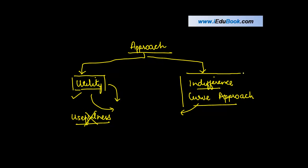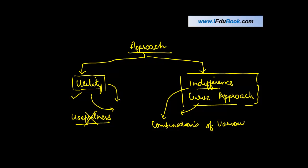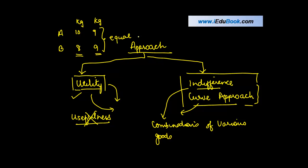The other approach is the indifference curve approach. An indifference curve in economics gives combinations of various goods. For example, with goods A and B, you could have 10 kg of A and 8 kg of B, or 9 kg of A and 9 kg of B — if both combinations give equal satisfaction to the consumer. These are called combination 1 and combination 2.